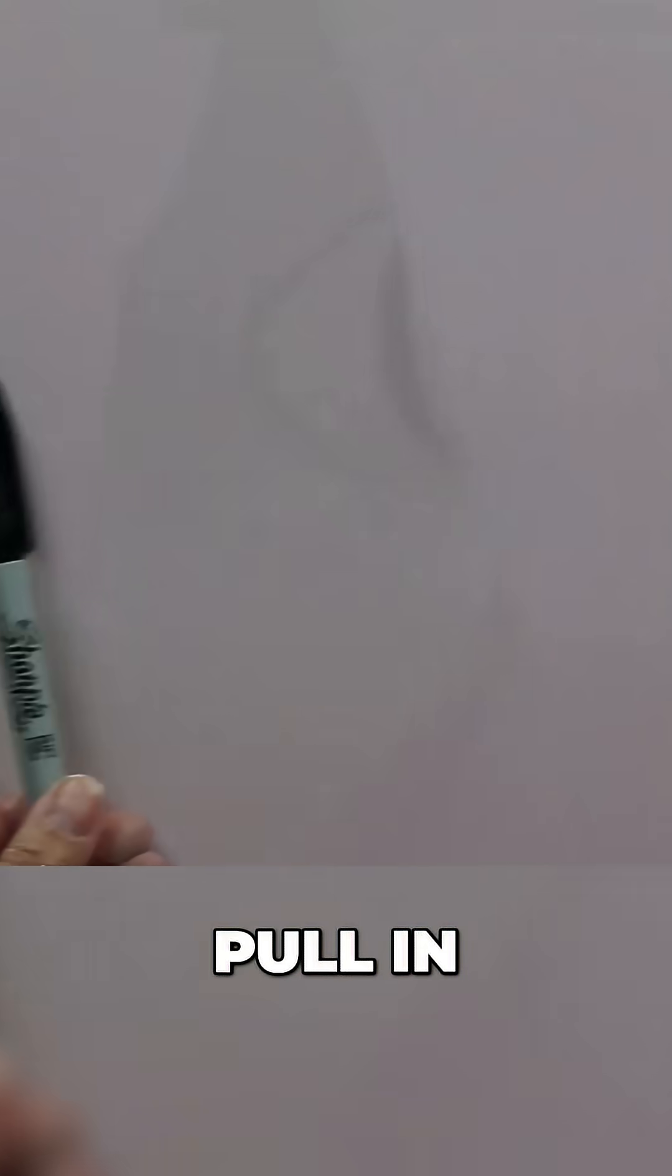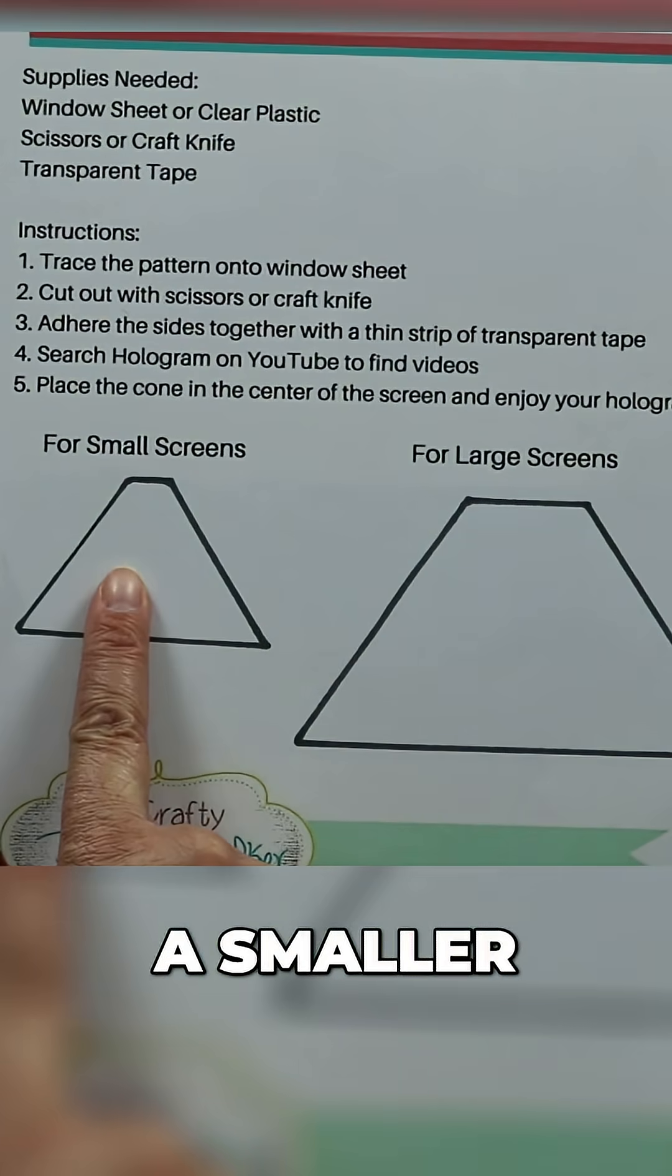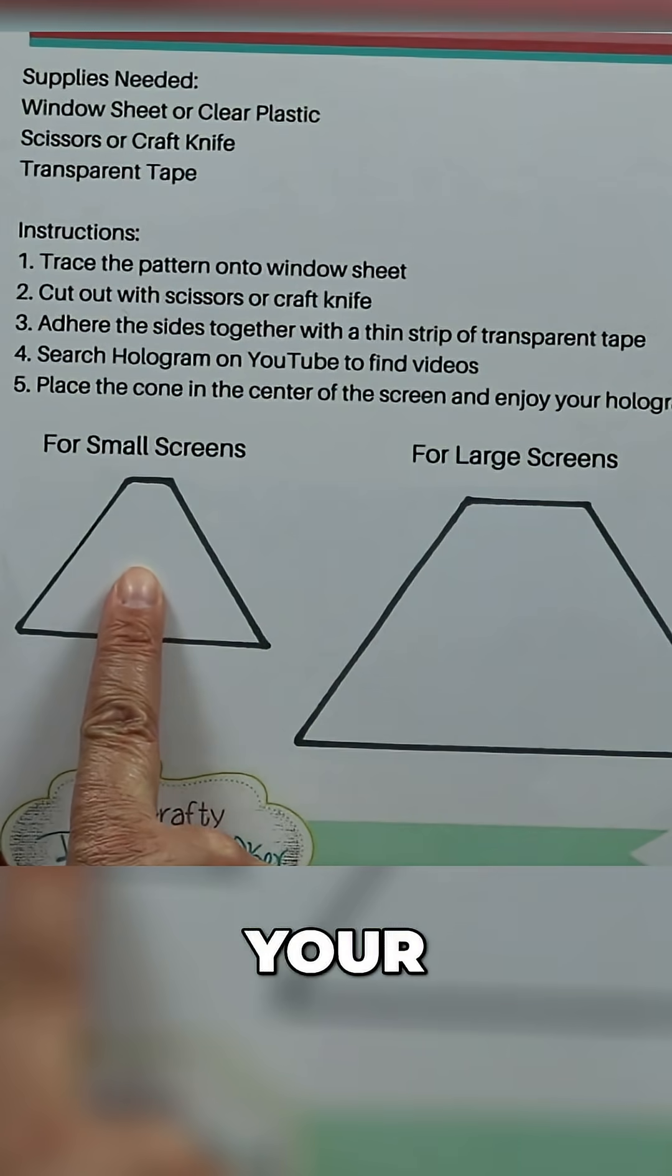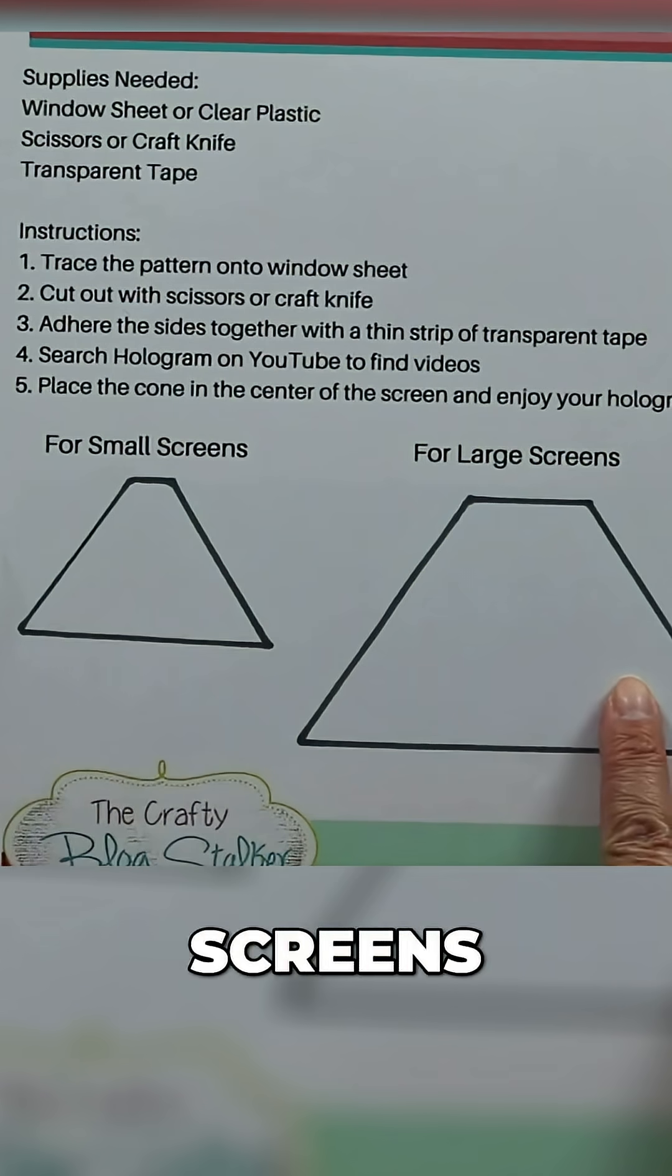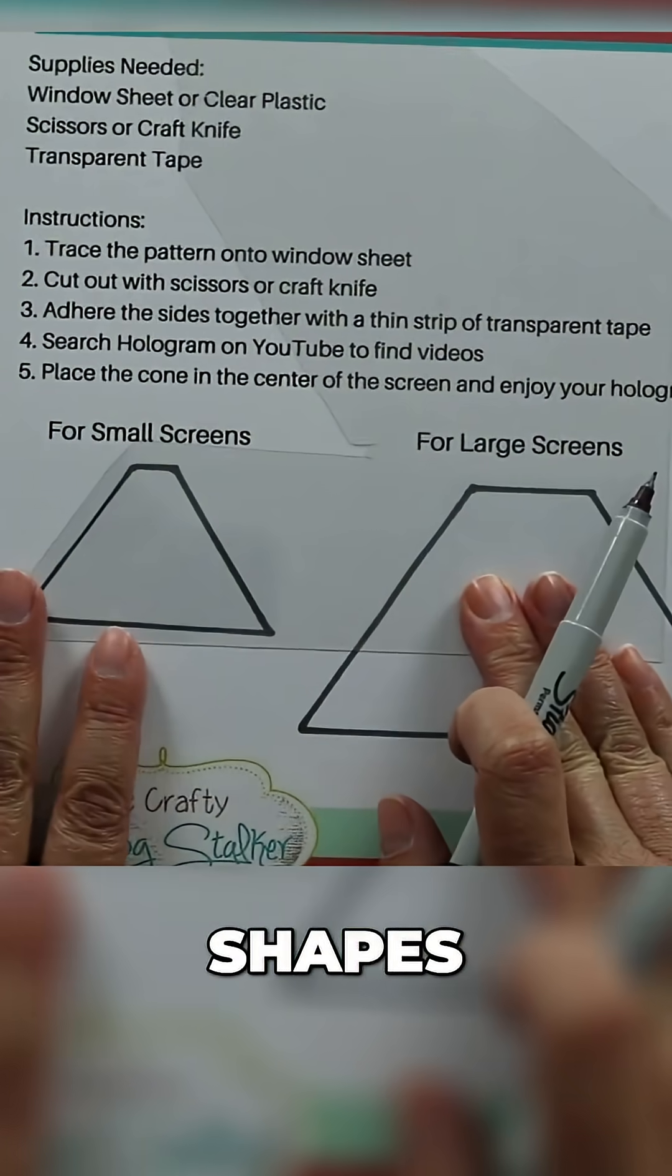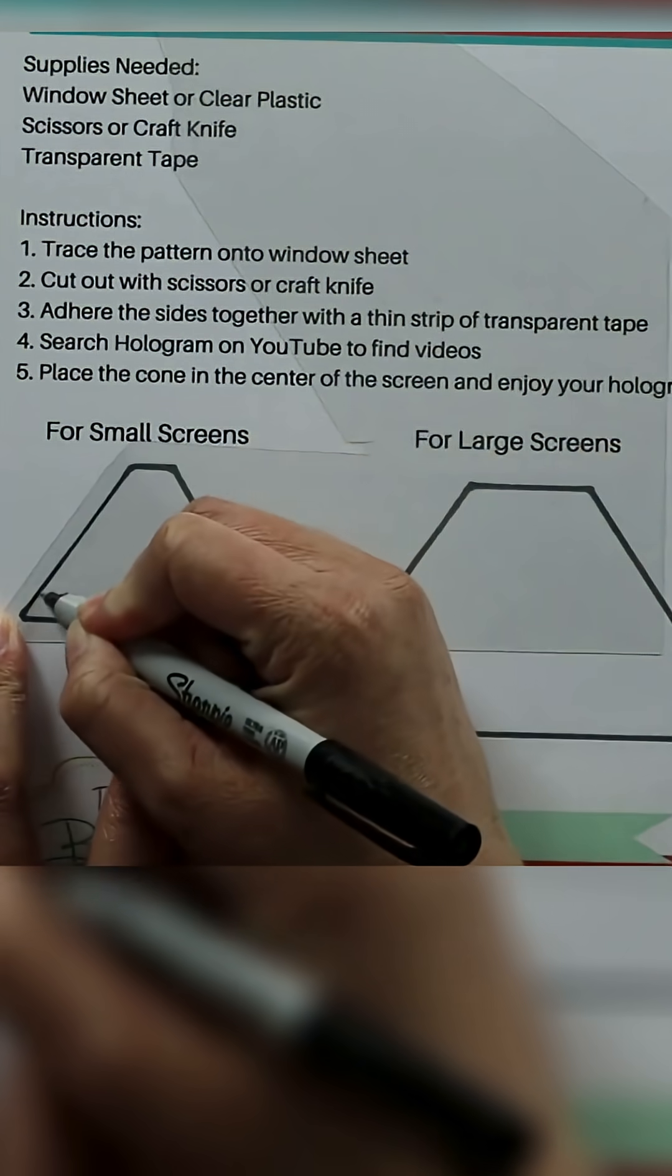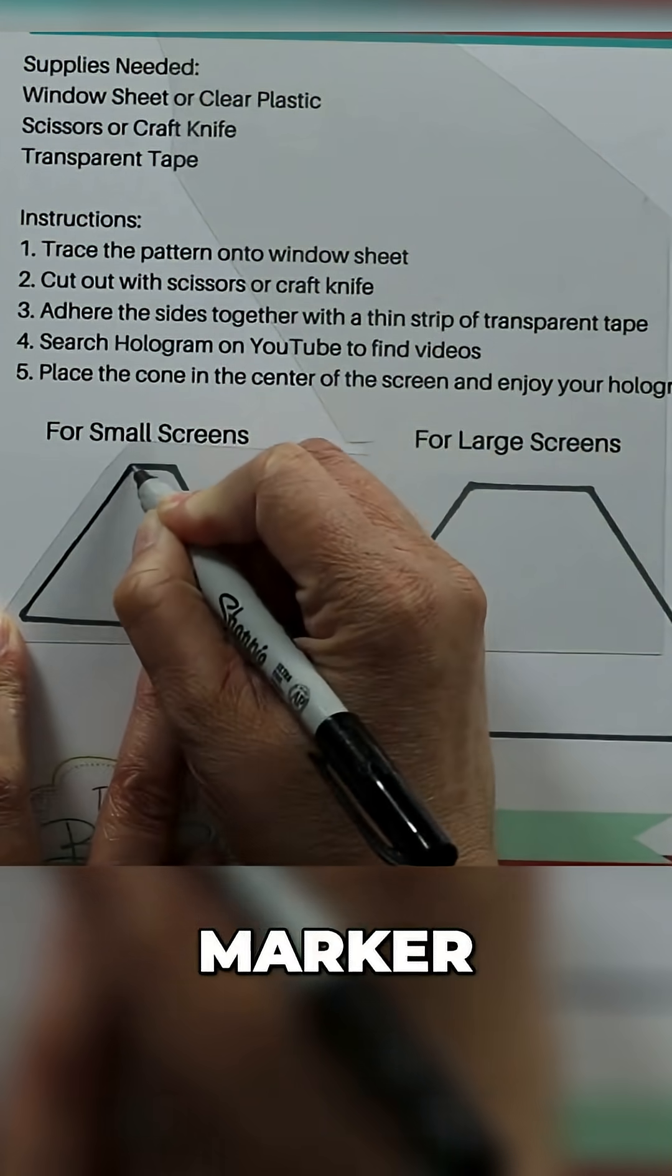I've got my Sharpie and my window sheet right here, and I'm going to pull in this printable PDF pattern. I've got two sizes: a smaller one for small screens, that's like your iPhones, and for larger screens, that's more like the iPads and tablets. Start by tracing those shapes right onto my window sheet just with a thin point or fine point Sharpie marker.